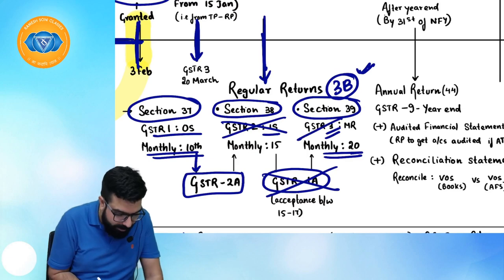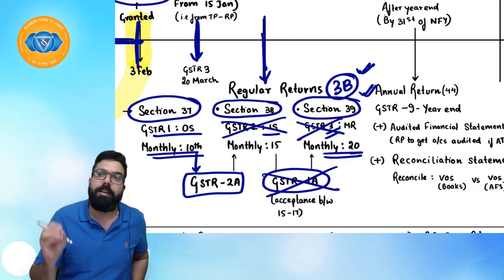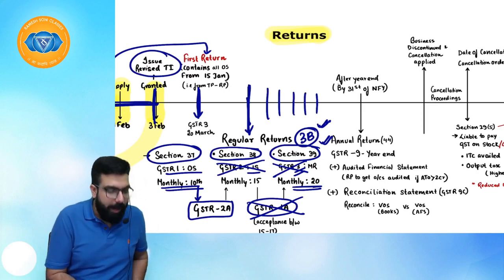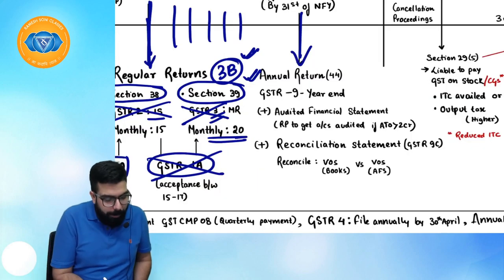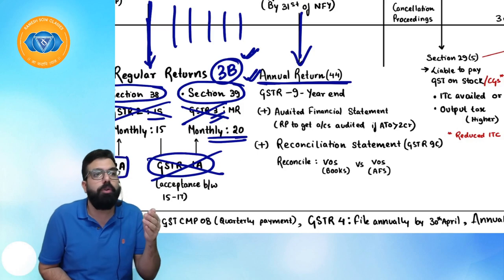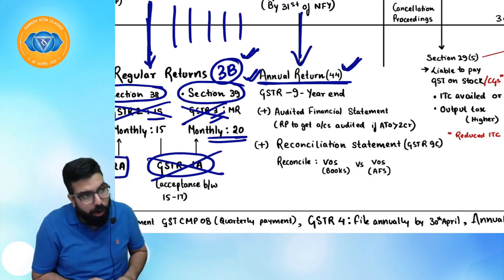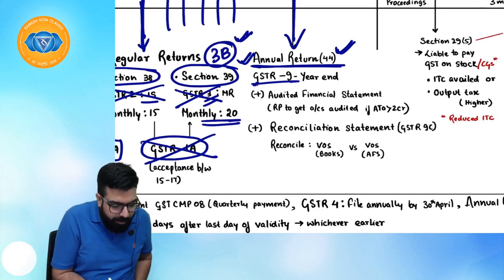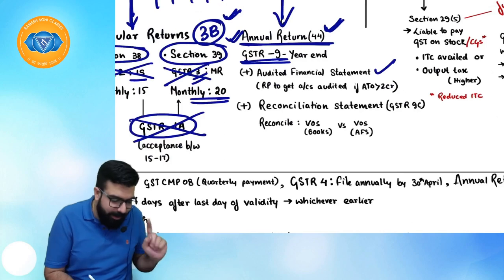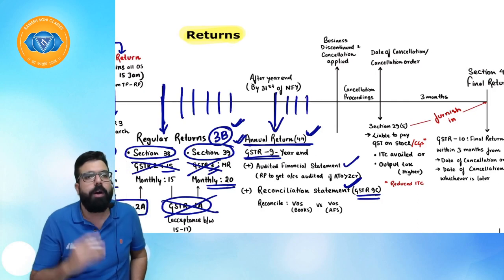After filing monthly returns throughout the year, at year-end you file your annual return under Section 44. Annual return is now optional for taxpayers with turnover up to ₹2 crore. If turnover exceeds ₹2 crore, annual return in GSTR-9 is mandatory, along with audited financial statements and a reconciliation statement in GSTR-9C.